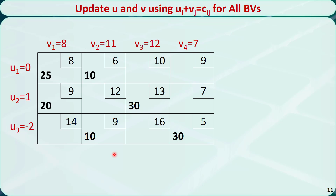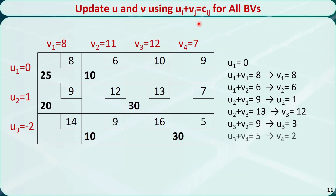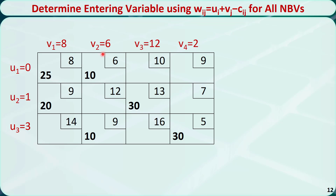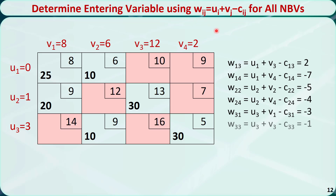In order to determine if this new basic feasible solution is optimal, we need to update u's and v's. We identify all the non-basic variables and mark them in red. For each non-basic variable, we calculate wij. Not all the wij are less than or equal to 0, so it is not optimal yet. The most positive wij is 2, so this cell will be the entering variable.